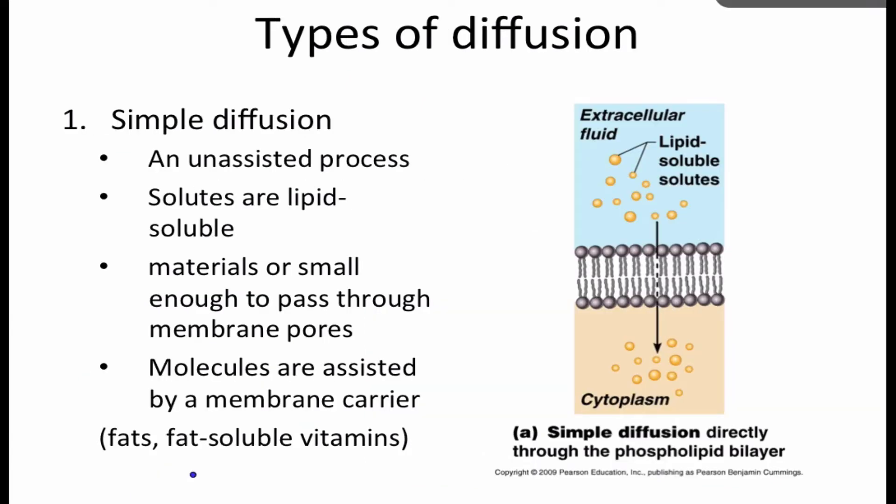Simple diffusion is an unassisted process. Solutes are lipid soluble, so that means they're able to move directly through the phospholipid bilayer. Materials must be small enough to pass through the membrane pores. Molecules can be assisted by a membrane carrier or they can cross by themselves. Examples of these are going to be fats, fat soluble vitamins, and those types of things.